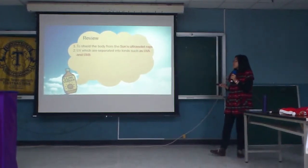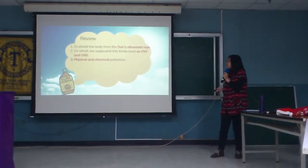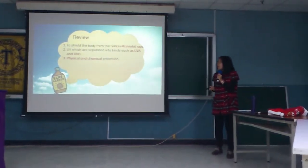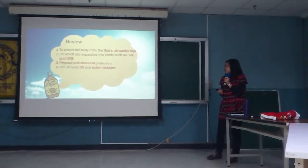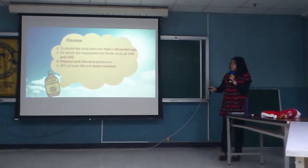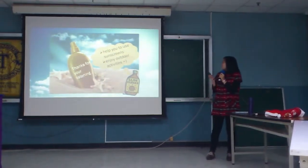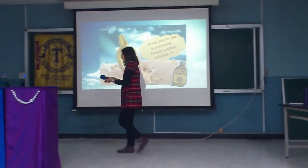Let's do a quick review. First, we wear sunscreen to protect the body from the sun's UV rays. Second, UV rays are separated into kinds such as UVA and UVB, and we know the effects on our skin from each. Third, we understood the two best types of sunscreen: physical and chemical protection. Finally, we know the best sunscreen is SPF 30 and water resistant. Thanks for your listening. I wish this information helps you to use sunscreen and enjoy outdoor activities.